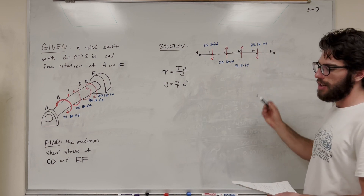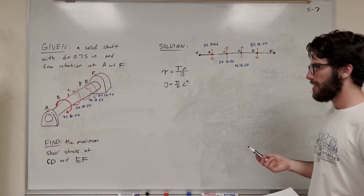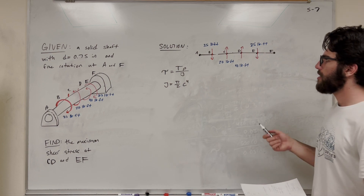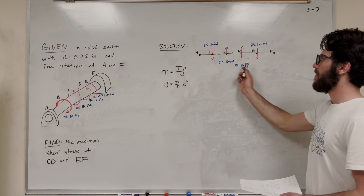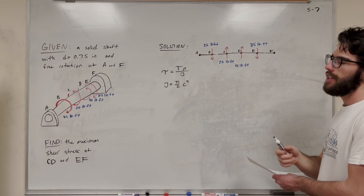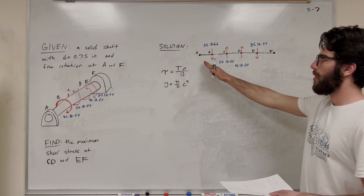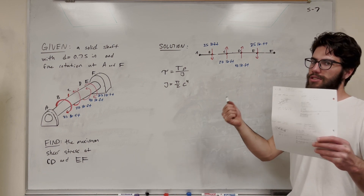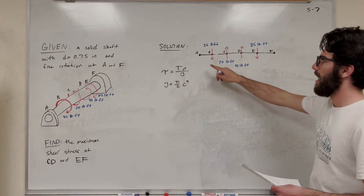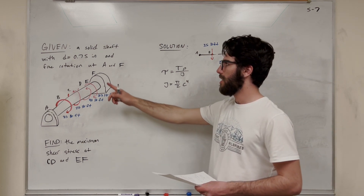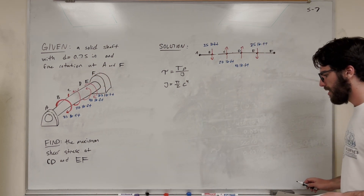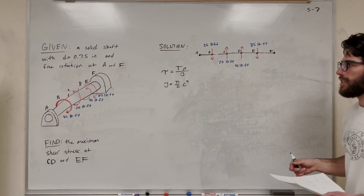So here and here. To do that, it's kind of like we're taking cuts to find the shear, but instead we're doing it with torque. First of all, if you add all of these up, it's going to be 35 minus 20 minus 40 plus 25 — you're going to get 0. That means our torque is balanced, so the rod is not rotating; it's going to stay still. So we're going to have no torque at A and F, which is true because we know that it's free rotation at that point.